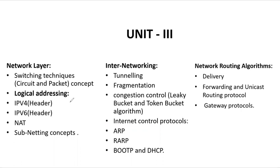In Unit 3 we will be studying switching techniques — circuit and packet concepts — then logical addressing: IPv4, IPv6, NAT, and subnetting. The unit is divided into three parts: first, the network layer overview; second, detailed protocols in IPv4/IPv6 headers such as ARP, RARP, and internet control protocols, plus tunneling and fragmentation; third, routing algorithms including delivery, forwarding, unicast routing protocols, and gateway protocols.